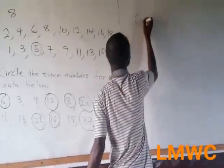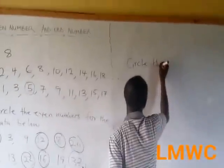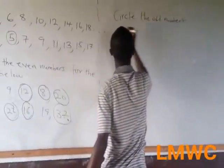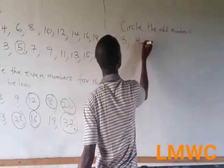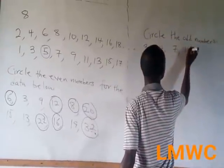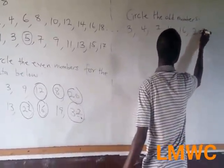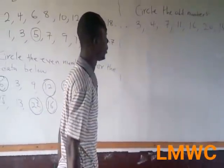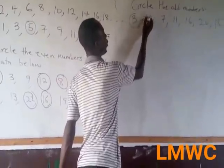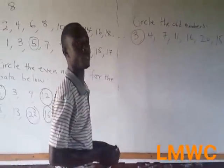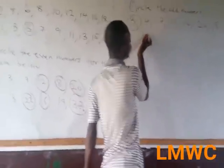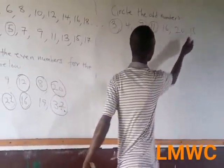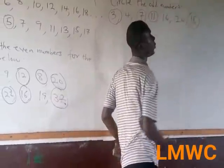I can also give you something like this. Circle the odd numbers. So 3, 4, 7, 11, 16, 20, and I have 15. So circle the odd numbers. We know 3 is an odd number, because 3 is not divisible by 2. 4 is an even number. 7, odd. 11, this is also odd, and 15 is also an odd number.